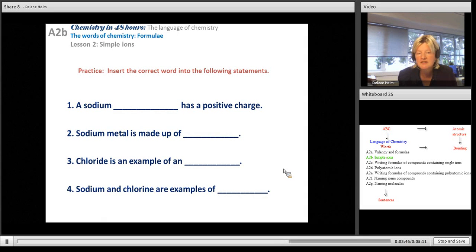Here are the answers. Lithium ion, sodium ion, or you could have said cation. Sodium metal is made up of atoms. Chloride is an ion, or you could have said anion or negative ion. And sodium and chlorine are examples of elements.